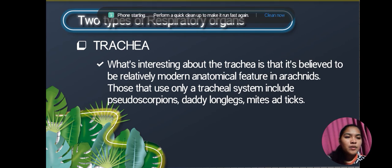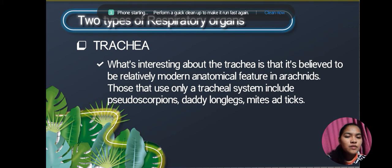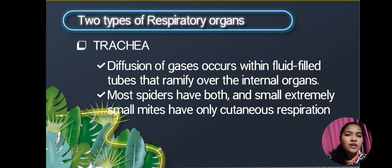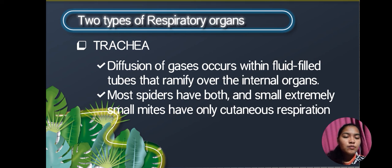Interestingly, the trachea is believed to be a relatively modern anatomical feature in arachnids. Those that use only the tracheal system include pseudoscorpions, daddy long legs, mites, and ticks. Diffusion of gases occurs within fluid-filled tubes that ramify over the internal organs. Mostly spiders have both book lungs and trachea, and extremely small mites have only cutaneous respiration.